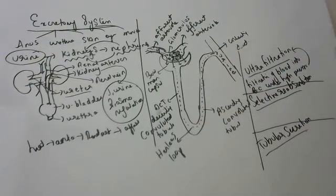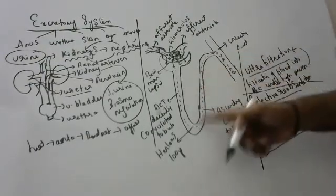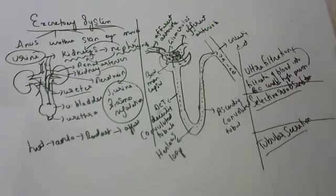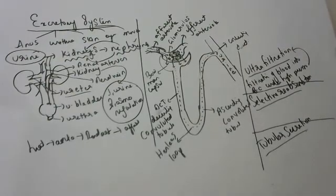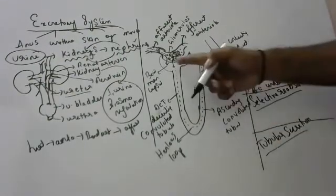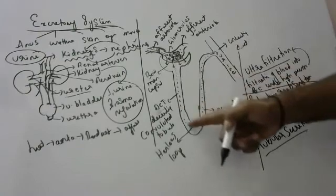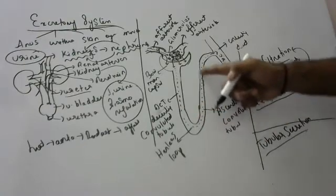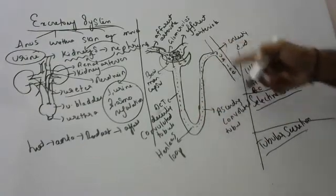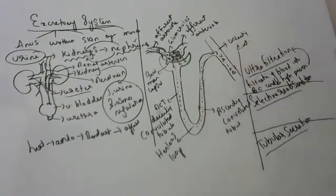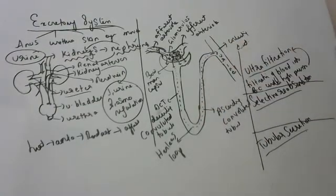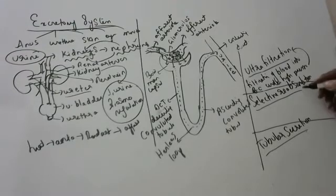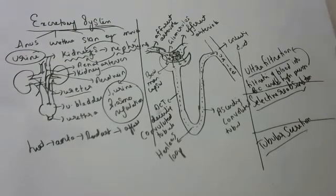What happened in the middle? The blood which came in here - by the time it comes out here, it becomes clean. What happened in the middle? In the middle, useful substances were collectively taken back.